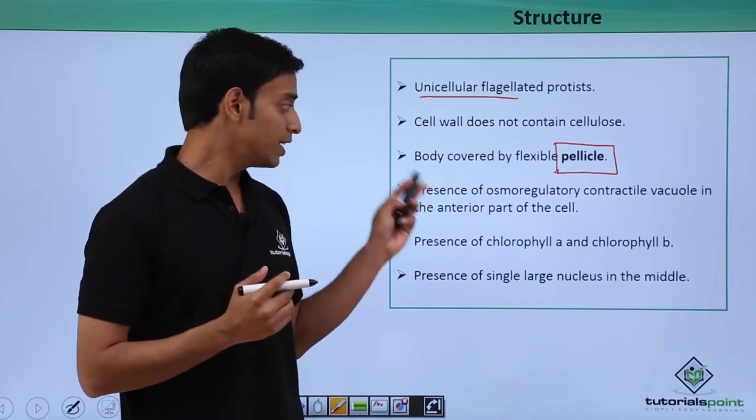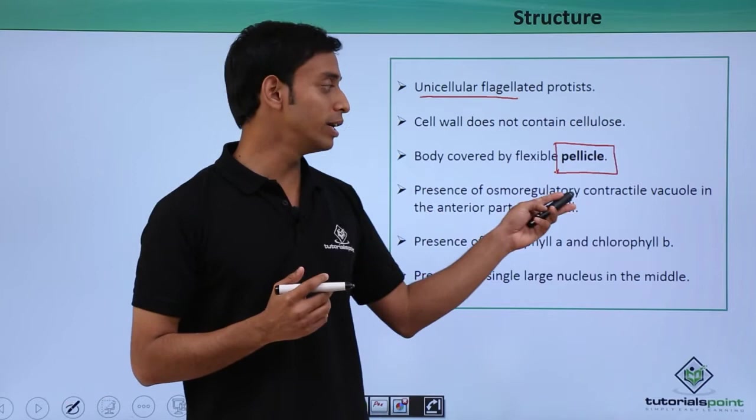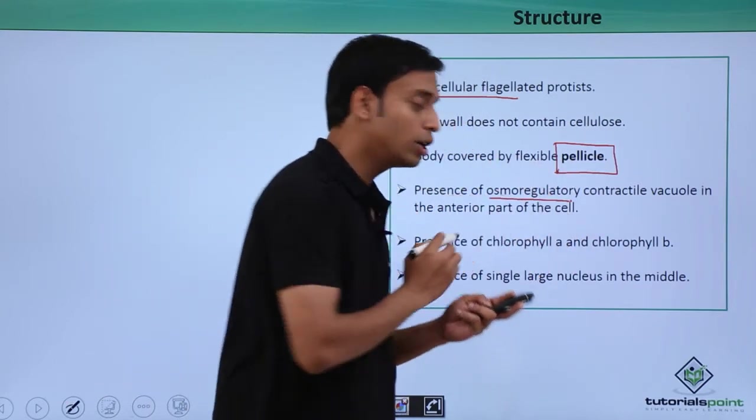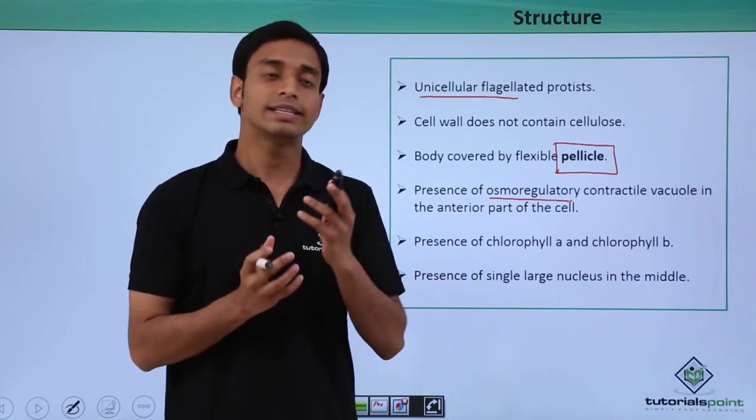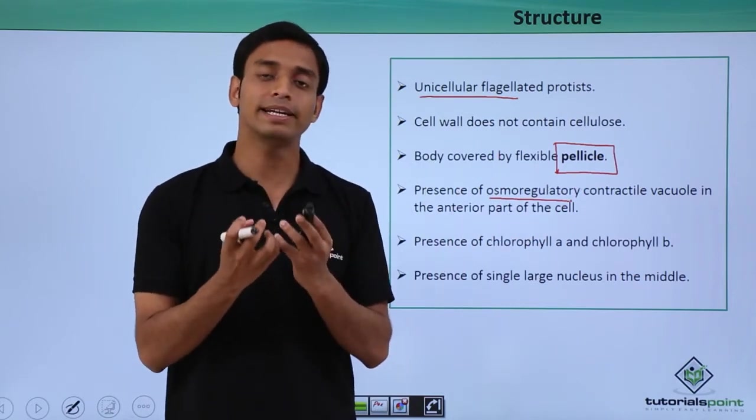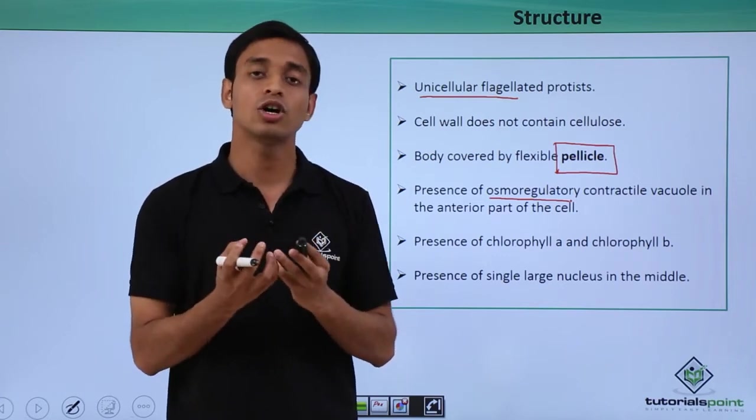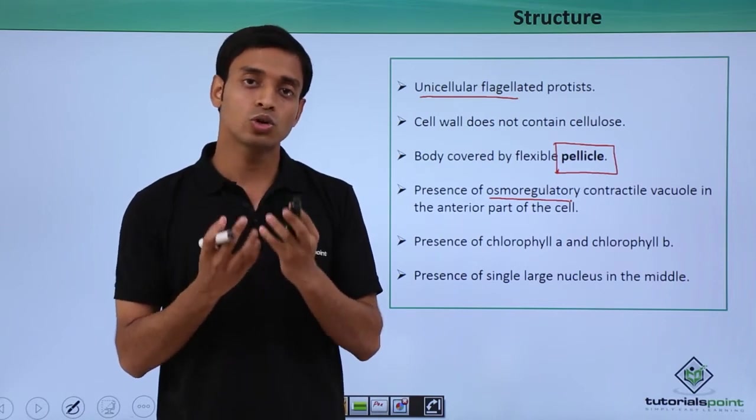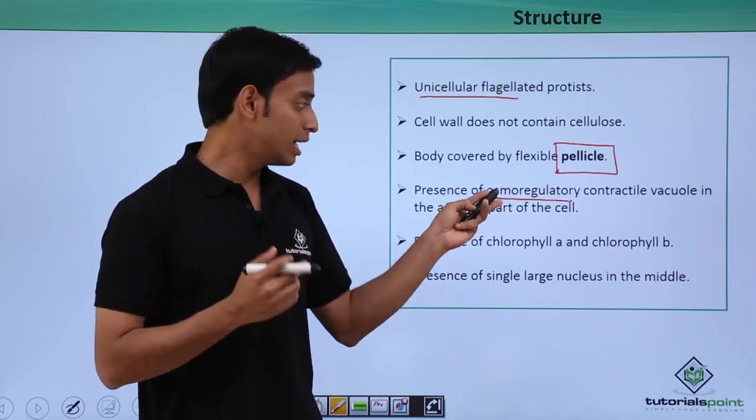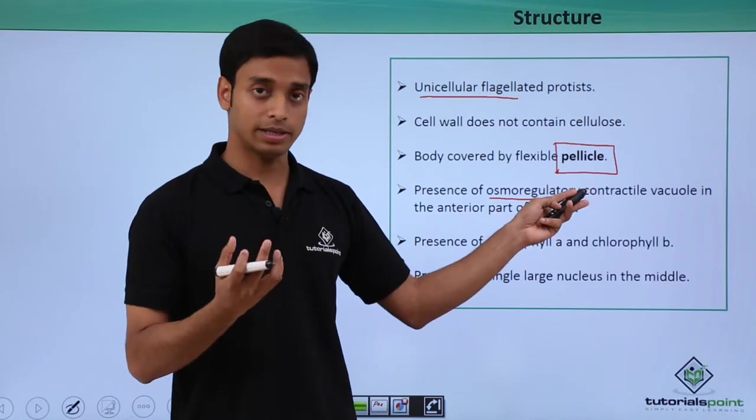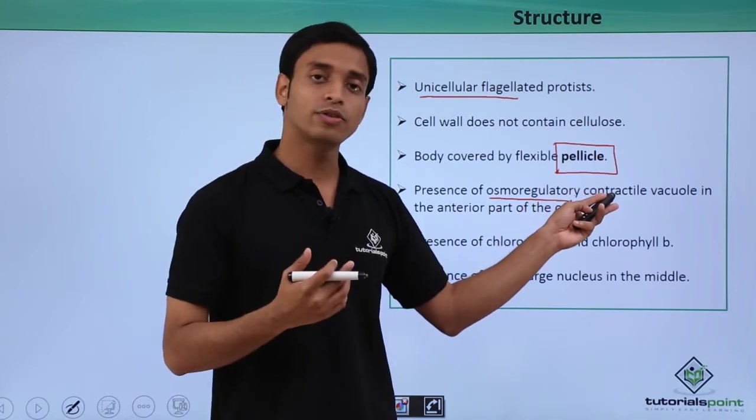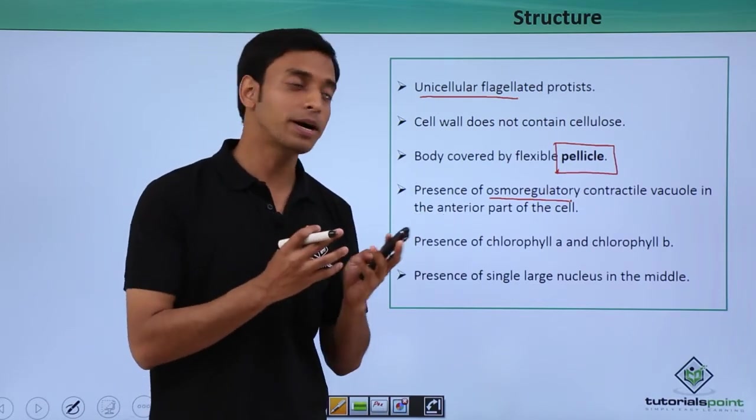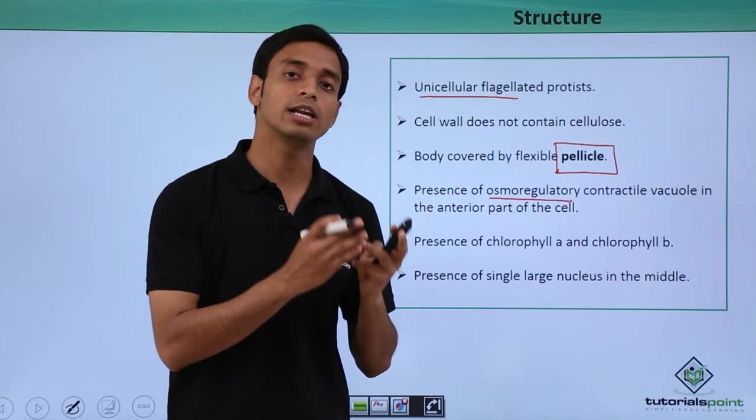They have the presence of osmoregulatory contractile vacuole. Very important. What do we mean by osmoregulatory? These contractile vacuoles help in maintaining the osmotic conditions or concentrations inside the cells of the organism as compared to that of the environment. They help in osmoregulatory conditions by the help of contractile vacuoles in the anterior part of the cell.